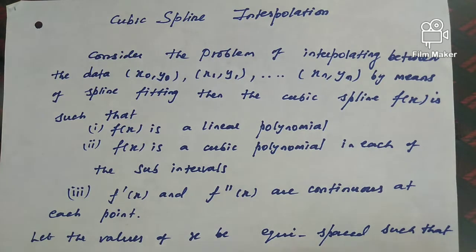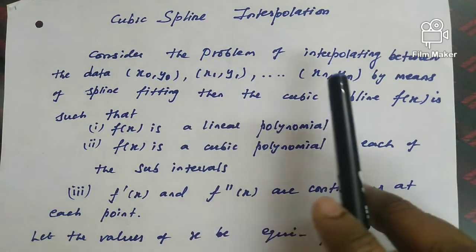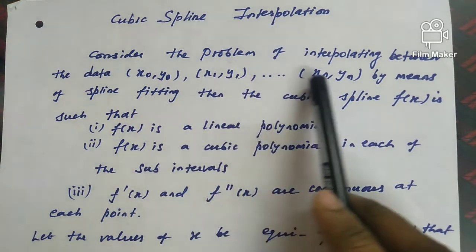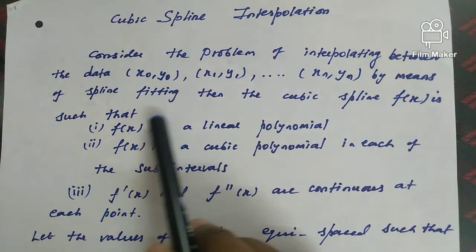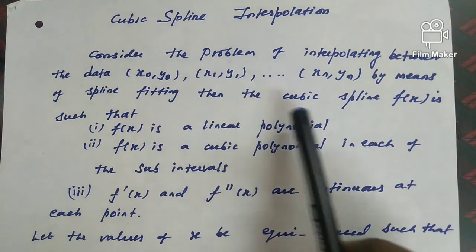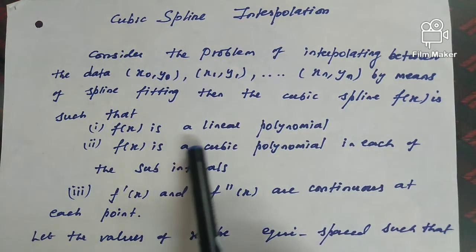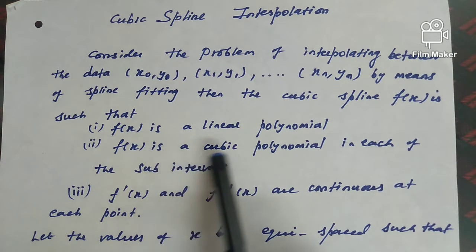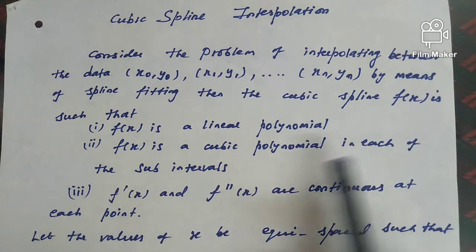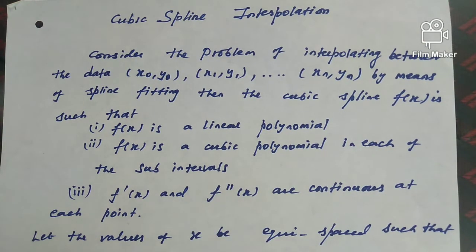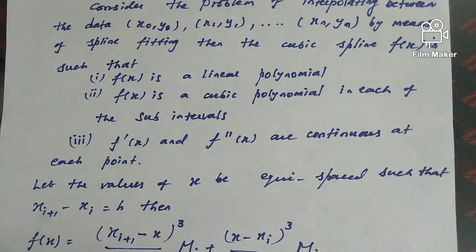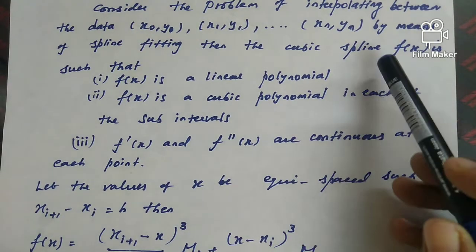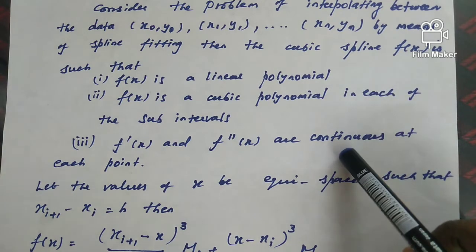For cubic spline, consider the problem of interpolating between data points (x0, y0), (x1, y1), ..., (xn, yn) by means of spline fitting. The cubic spline f(x) satisfies: f(x) is a linear polynomial outside the interval, f(x) is a cubic polynomial in each subinterval, and f'(x) and f''(x) are continuous at each point.